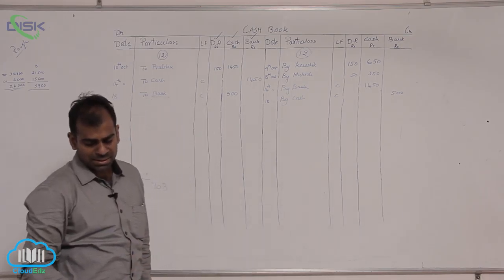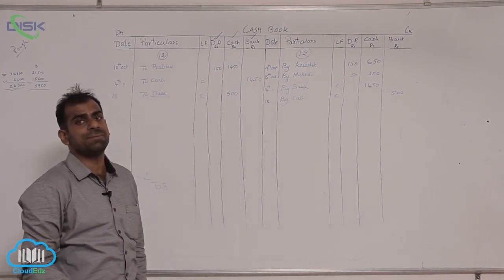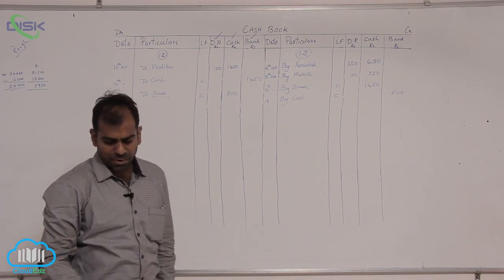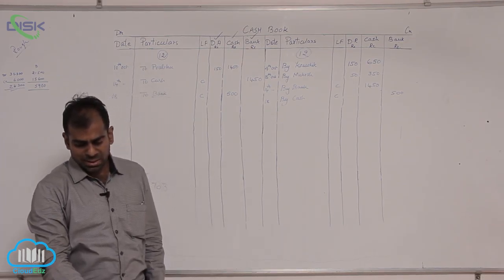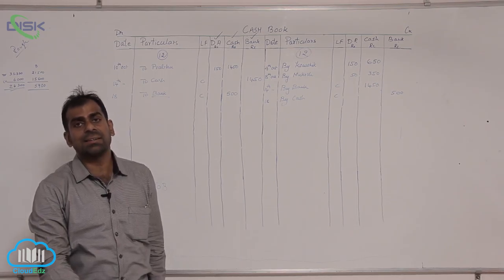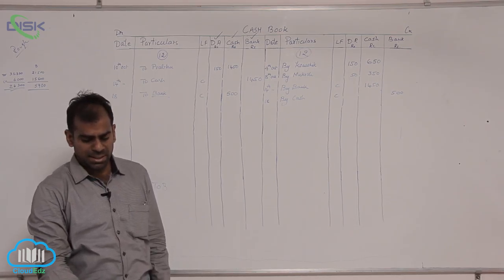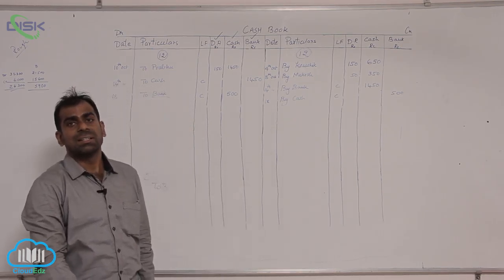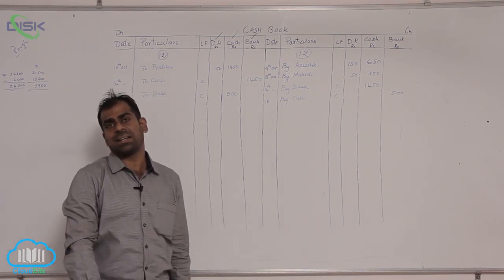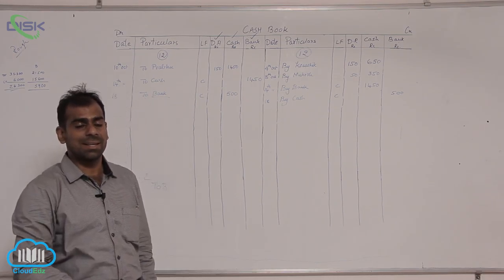Now, the next transaction what I am discussing is on 24, on 24 it has received cheque from Naresh 2300, discount allowed 200, Naresh cheque sent to bank. So, the day of receipt of the cheque and the day of deposit is same.